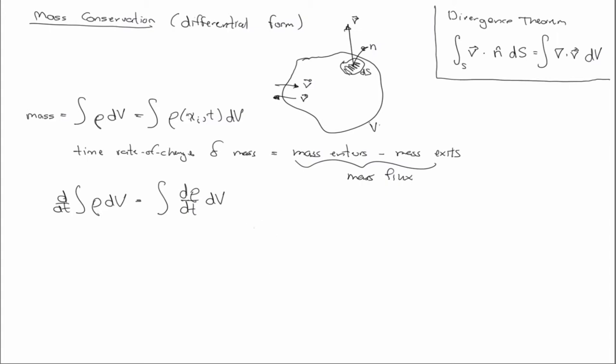And that has to equal the mass flux. So the mass flux is integral rho v dot n ds. And typically, just as a convention, because the way I've drawn it here, the mass flux is leaving. The v is pointing out. So that would be leaving the control volume, exiting. So as a convention, we'll put a minus sign there.